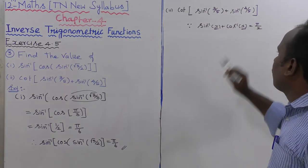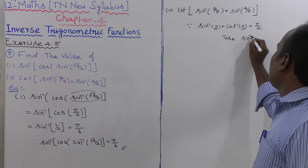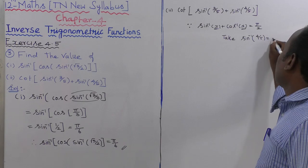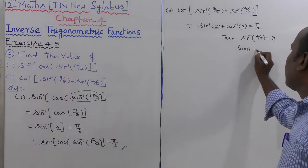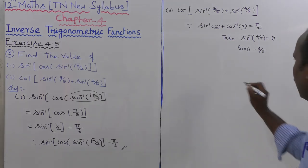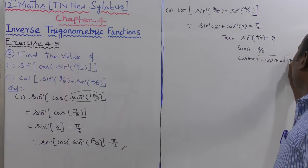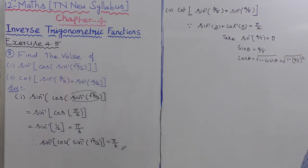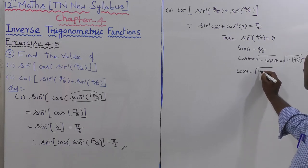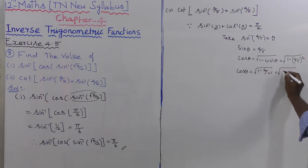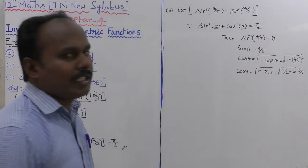Let us take sin inverse of 4 by 5 equals theta, so sin theta equals 4 by 5. Then cos theta equals root of 1 minus sin squared theta, which equals root of 1 minus 16 by 25, equals root of 9 by 25, equals 3 by 5. Therefore cos theta equals 3 by 5, meaning theta equals cos inverse of 3 by 5.